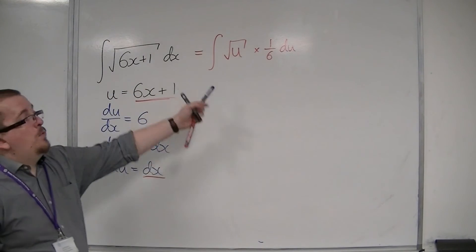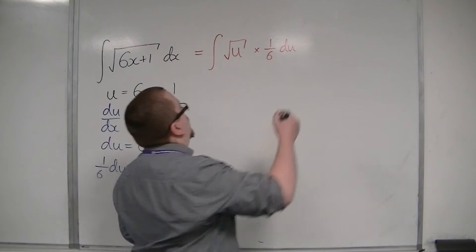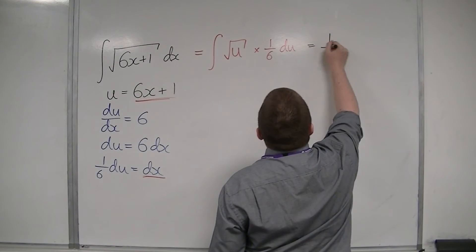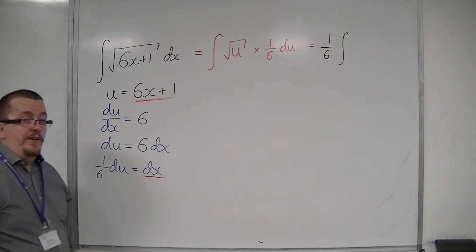So, this is equal to the integral of the square root of u and dx is 1 sixth du. So, this is currently what my integral looks like. I want to tidy this up. So, I'm going to take the 1 sixth outside of the integral, which is a perfectly valid move. It's just a constant term.